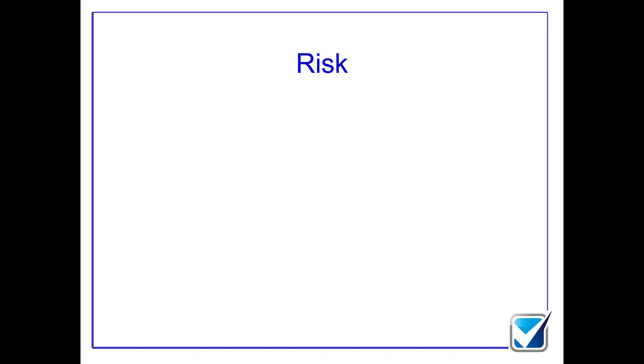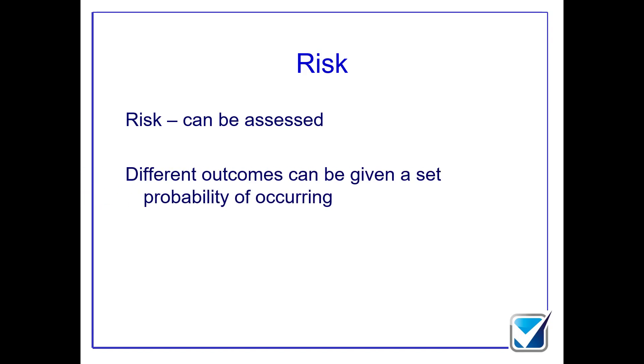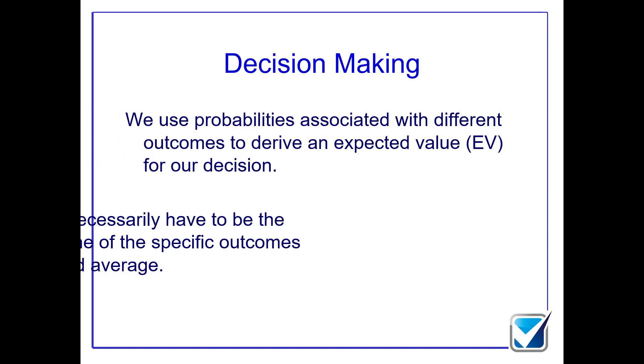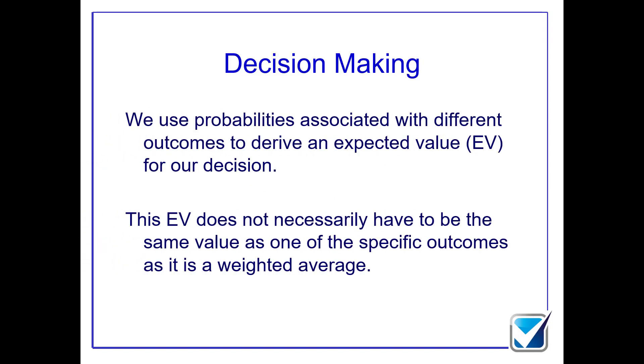In this section we're specifically looking at risk. Remember when we have risk, we know what all the outcomes will be with a level of certainty, and we can assign a percentage chance to these different outcomes. We can take those percentage chances and multiply them by the outcomes, which gives us an expected value. That's what this session is all about, calculating an expected value.